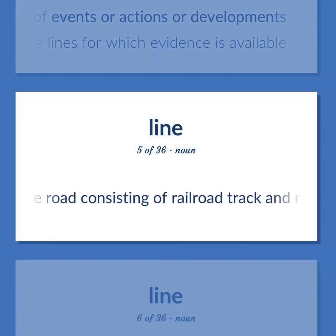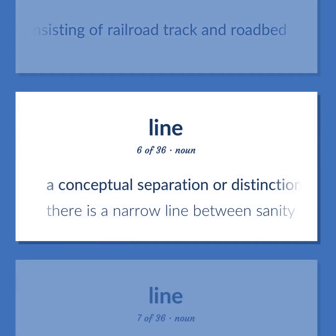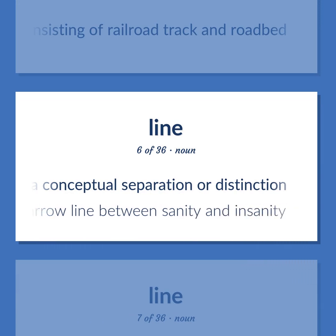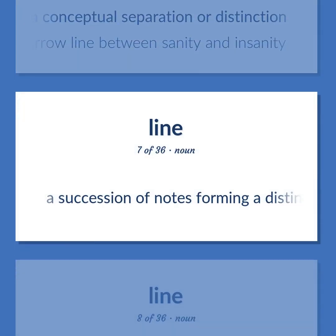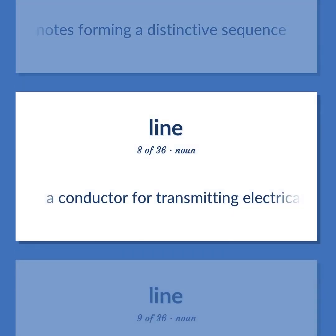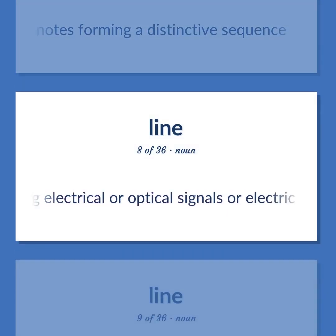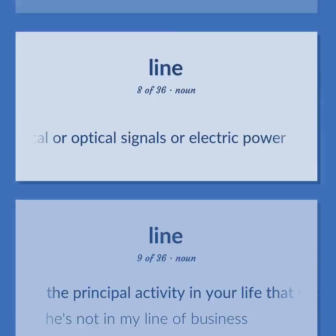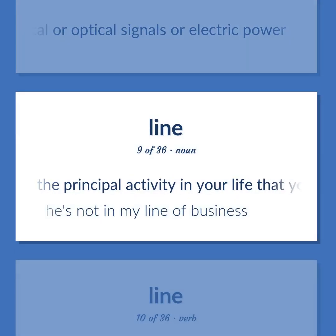The road consisting of railroad track and roadbed. A conceptual separation or distinction. There is a narrow line between sanity and insanity. A succession of notes forming a distinctive sequence. A conductor for transmitting electrical or optical signals or electric power. The principal activity in your life that you do to earn money. He's not in my line of business.